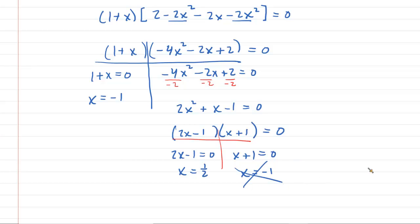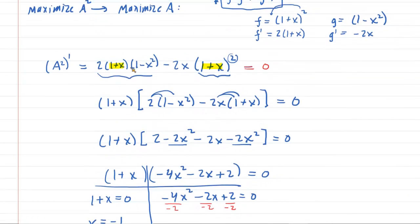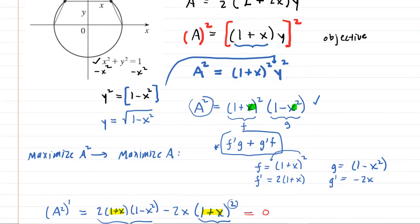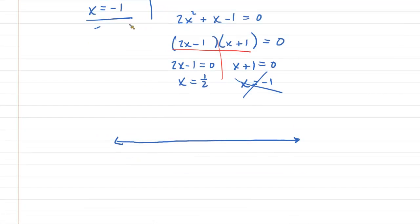We get repeated roots, so x equals negative 1 is already accounted for. Furthermore, plugging x equals negative 1 back into the area equation gives 1 plus negative 1 times y, which makes area equal 0 — not a useful maximum. So we reject x equals negative 1 outright and focus on x equals 1 half. We test values on either side: something less than 1 half, like 1 fourth, and something greater, like 1.